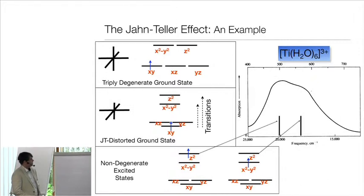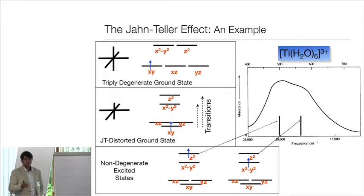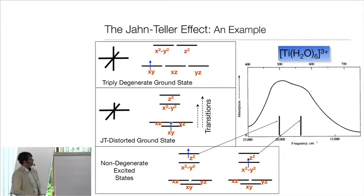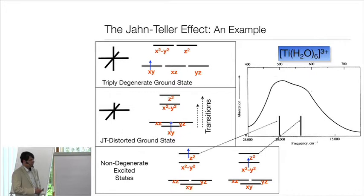We can go back to the spectrum of hexaaquotitanium³⁺ and understand why the band shape is asymmetric. In this case there are actually two Jahn-Teller effects — one in the ground state (t₂g¹ is weakly Jahn-Teller active since t₂g is π-antibonding) and one in the excited state (e_g¹ is strongly Jahn-Teller active since e_g is σ-antibonding). The stronger interaction with ligands in e_g means the excited-state Jahn-Teller effect dominates. It splits the degeneracy of the doublet e_g term and that is what you observe as the asymmetric band shape.